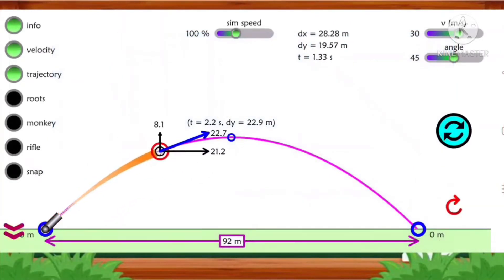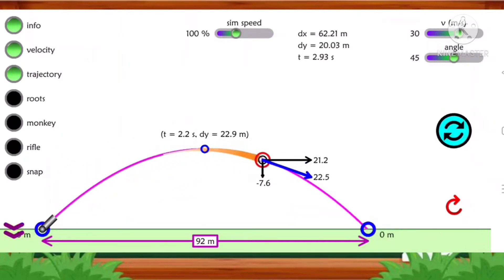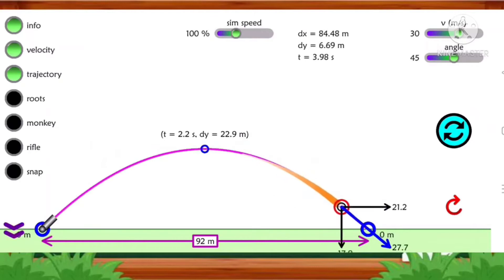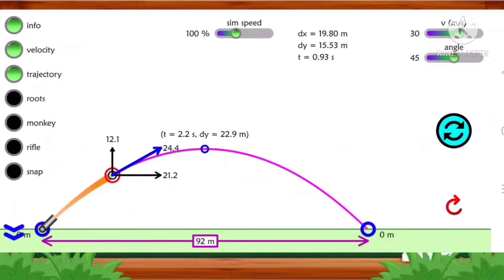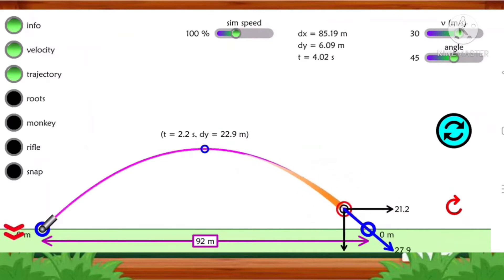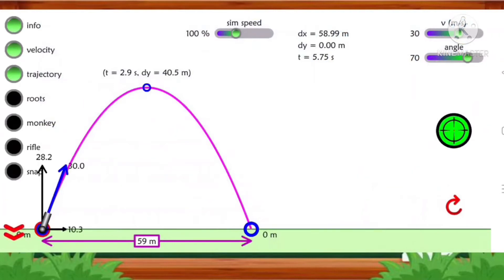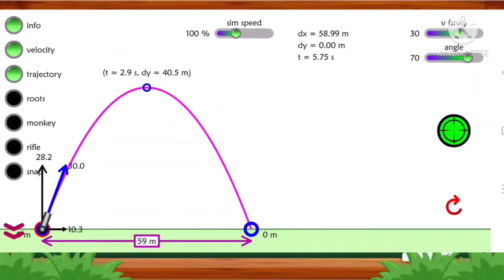Trial 2: Angle 45 degrees, initial velocity 30 m/s, maximum height 22.9 meters, horizontal range 91.74 meters. Trial 3: Angle 70 degrees, initial velocity 30 m/s, maximum height 40.50 meters, horizontal range 58.99 meters.